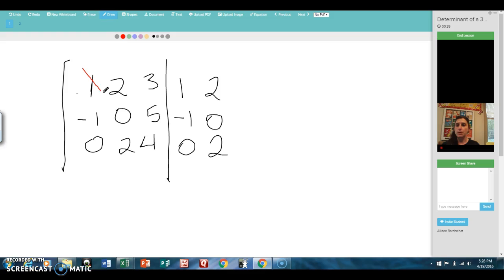So I'm going to multiply this guy. 1 times 0 times 4 is 0. I'm going to multiply this guy. 2 times 5 times 0 is 0. I'm adding these. And then one more time. 3 times negative 1 times 2 is negative 6.